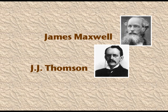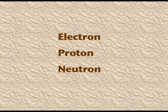Dalton's theory was able to prove the laws of chemical combination — the law of conservation of mass, law of constant composition, and law of multiple proportion. But it failed to explain why rubbing a glass rod or ebonite rod with fur or silk produces electricity. Various discharge tube experiments by Maxwell, J.J. Thomson, and Chadwick established that the atom is divisible, and that the fundamental subatomic particles are electron, proton, and neutron.